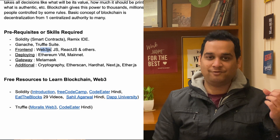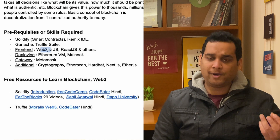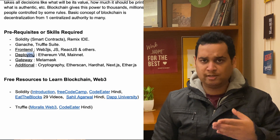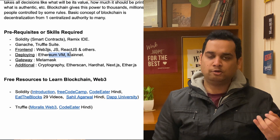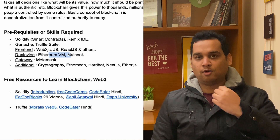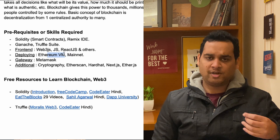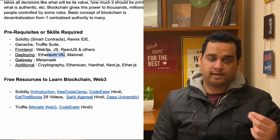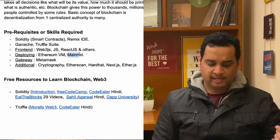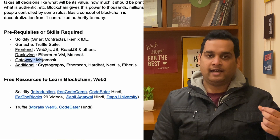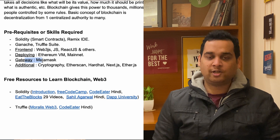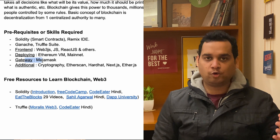There is a specific library called Web3.js, which is very commonly used and has many methods and functions for building Web3 applications. For deployment, you can use the Ethereum Virtual Machine (EVM) or Mainnet — it's like AWS but dedicated to blockchain. You can create endpoints through which your blockchain communicates with the outer world. MetaMask is a wallet you use to connect with Ethereum and make transactions — it's very important for crypto-related applications.